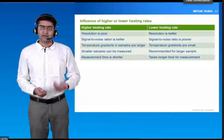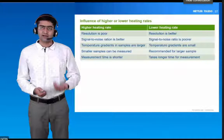You can see some of the effects of the heating rate on the results. For example, this is a decomposition of benzyl peroxide. With different heating rates, you can see the sharpness and the signal-to-noise ratio. In a similar way, you can also see the melting sharpness as a function of heating rate.